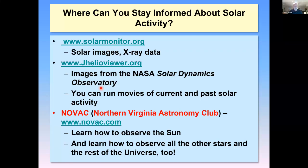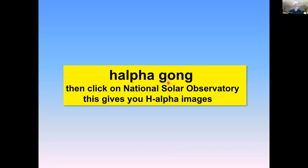So where can you see information about all of this? You should look at Solar Monitor — that'll give you some EUV images plus a white light image, and you can go down and see where the sunspots are any day you want. And of course, you can get information about the sun from NOVAC. But the best place to see H-alpha is to go to your phone and just Google 'H-alpha GONG' and then click on the National Solar Observatory. This will give you H-alpha images.